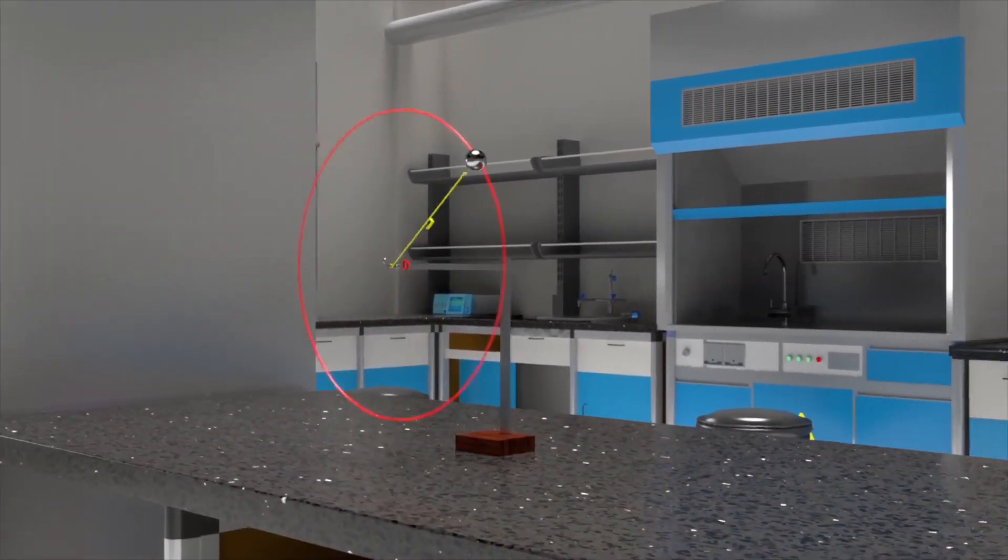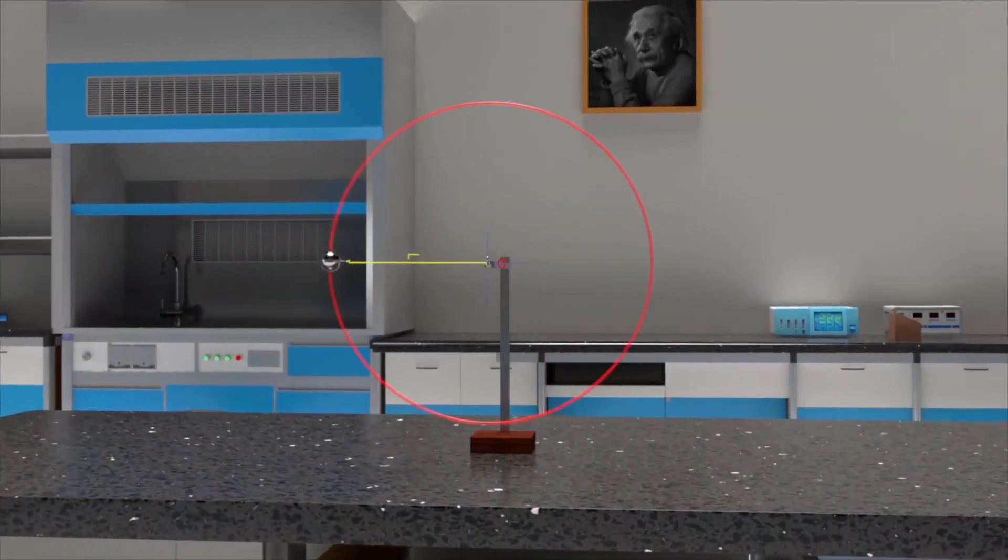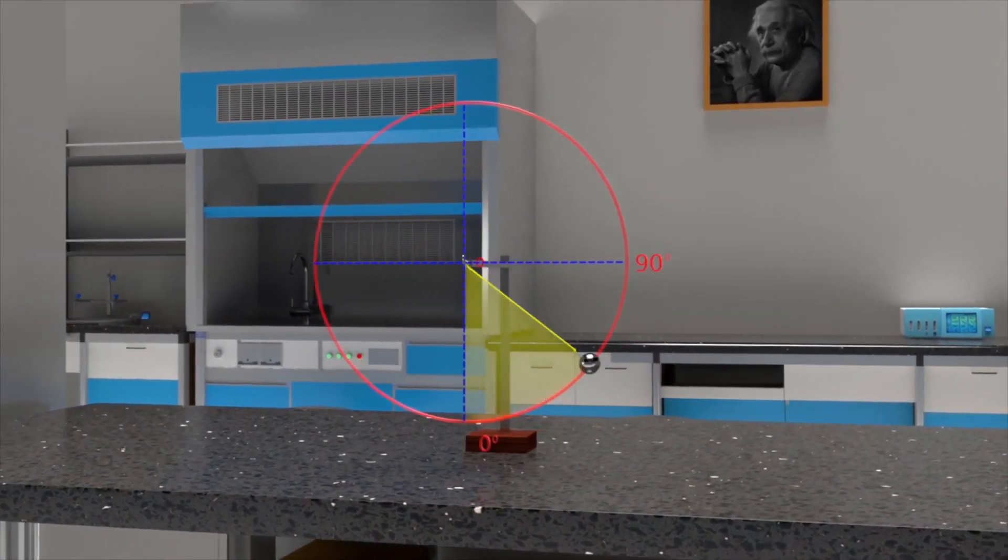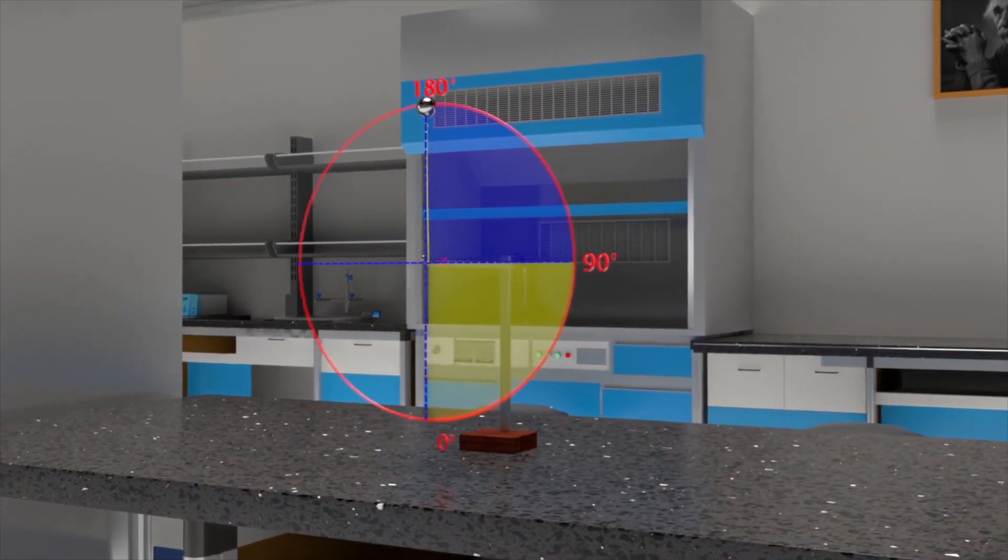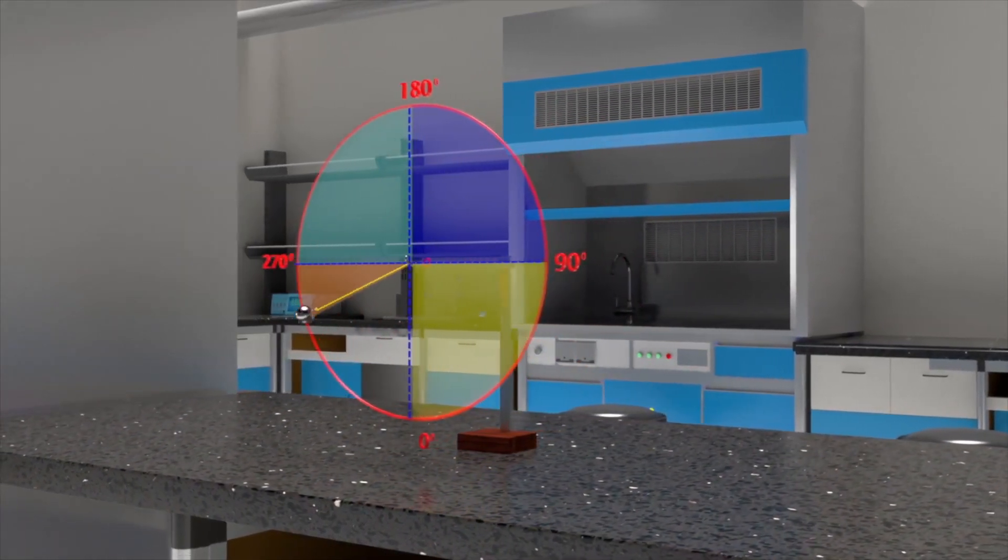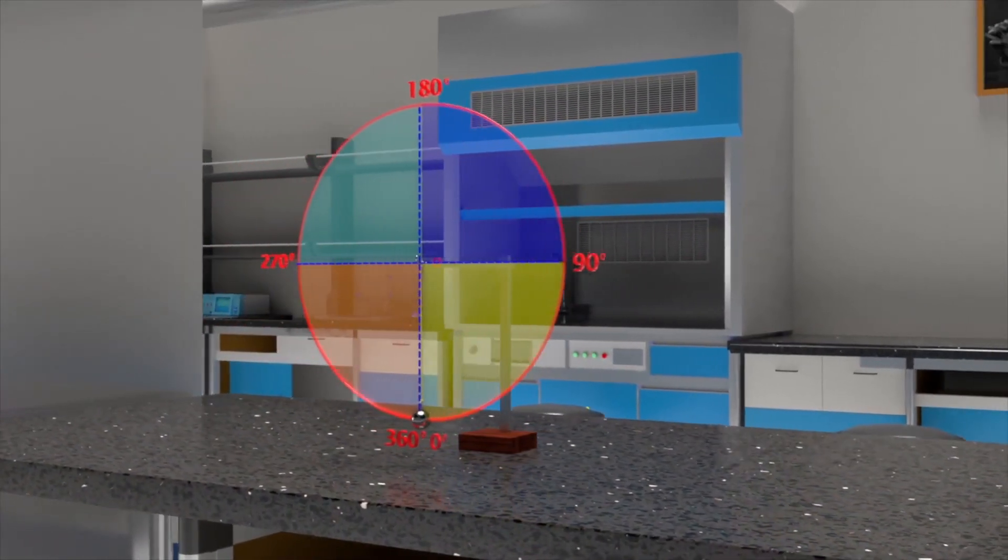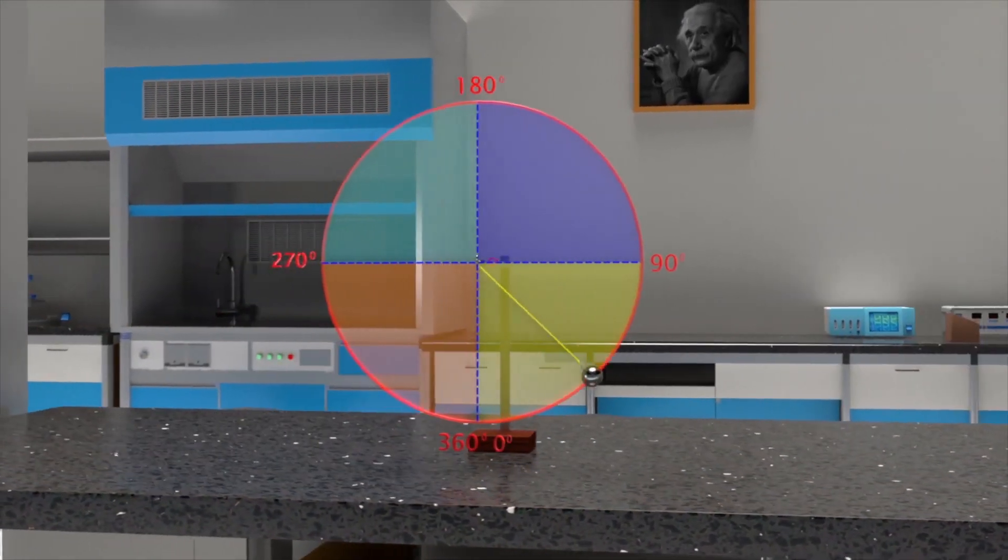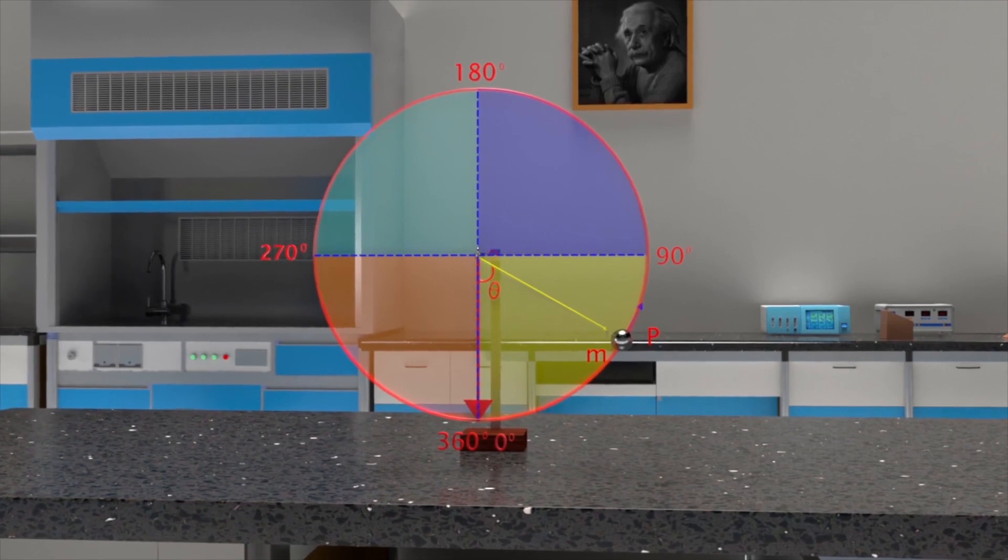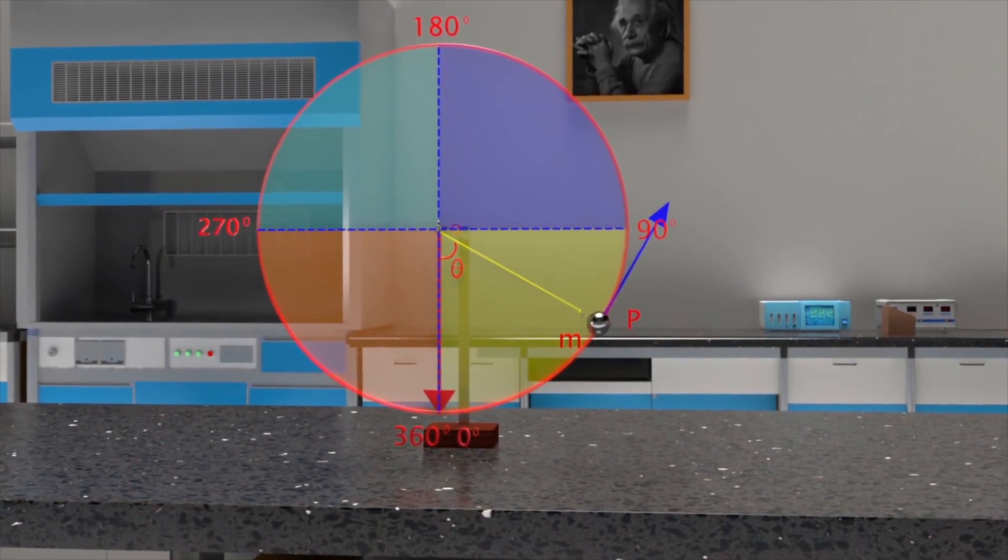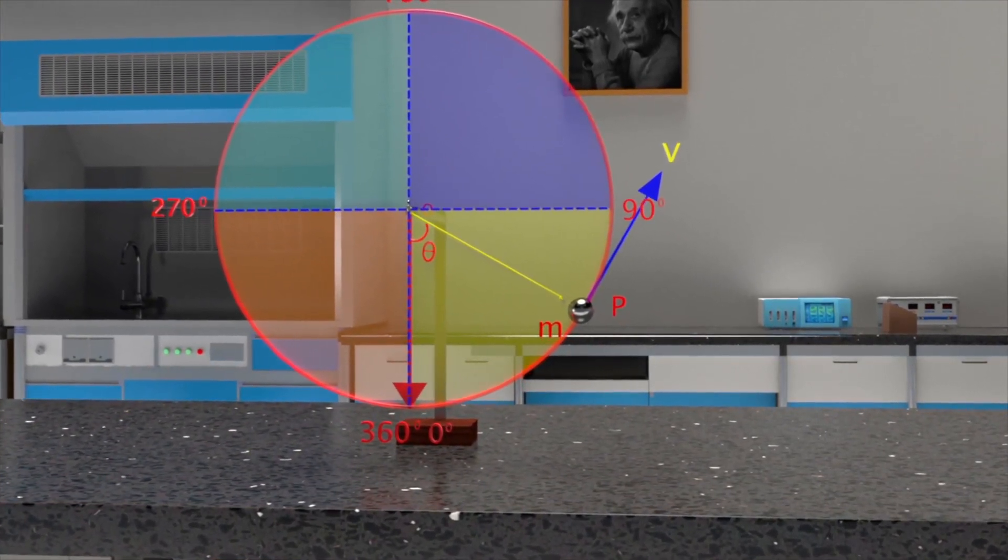Let's divide the circular path the bob may take into four quadrants around point O: 0 to 90 degrees, 90 to 180 degrees, 180 to 270 degrees, and 270 to 360 degrees. Consider the bob at point P, where OP makes an angle theta with the vertical line OA. Speed of the bob at P is V, and it is tangential to the circular path.